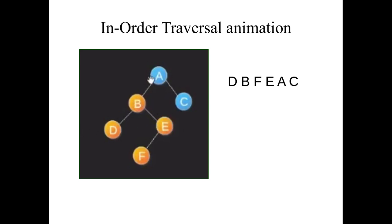E does not have a right child, so the left subtree of A is completely visited. Next we visit A as the root node. Then we visit the right child C, which has no subtrees, so we visit C directly. This is called in-order traversal for a tree with six nodes. If you have any doubts, please comment. Thank you.